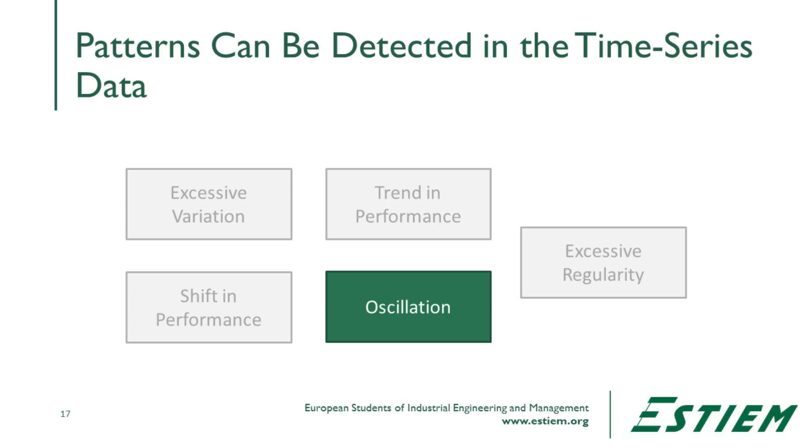Another pattern is oscillation — data moving up and down in a regular pattern. This instability may indicate a compound probability distribution, perhaps from alternating between one supplier and a second supplier. There is some underlying capability in the data, and we need to understand where that pattern is coming from.